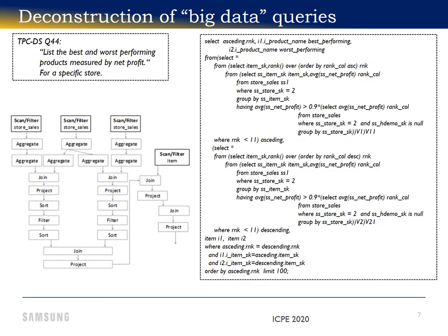This is what a query looks like. This one is looking for the best and worst performing products for a specific store. To answer that question, we must scan a very large table containing all sales for all stores. We must calculate the average net profit for each item sold by a specific store and compare all other sales to that average.